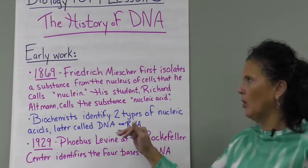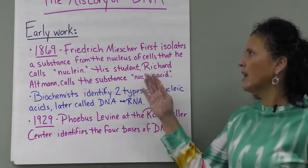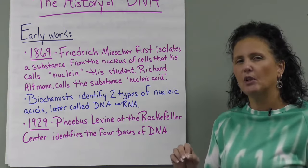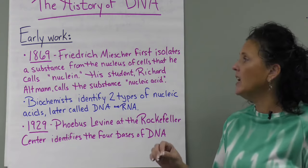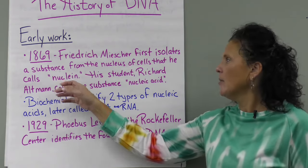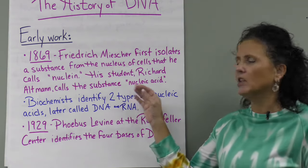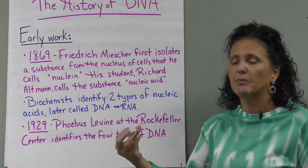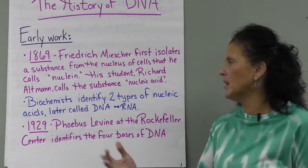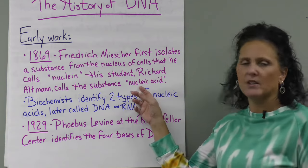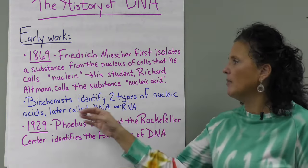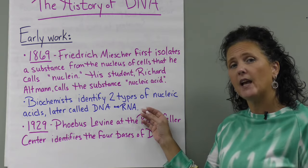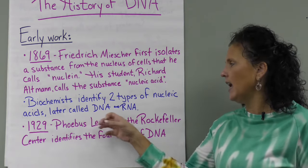Here's the early work. If you go back to 1869, a guy named Friedrich Meischer isolates a substance from the nucleus of cells and calls it Nuclein. But his student Richard Altman calls it Nucleic Acid. So now we know there's a substance in the nucleus labeled Nucleic Acid, because it has an acid group on it and was found in the nucleus. Later on, biochemists identify that there are two different types of Nucleic Acids: DNA and RNA.